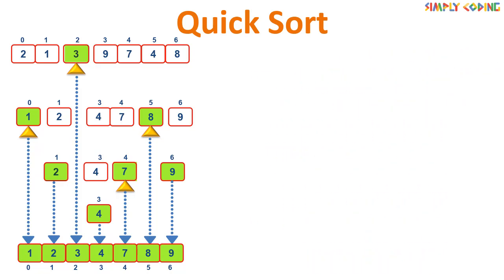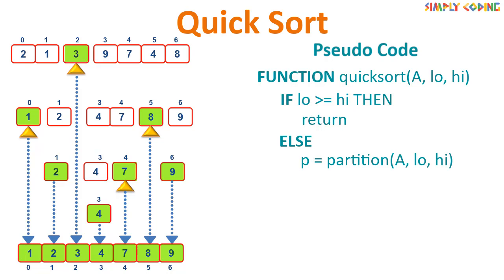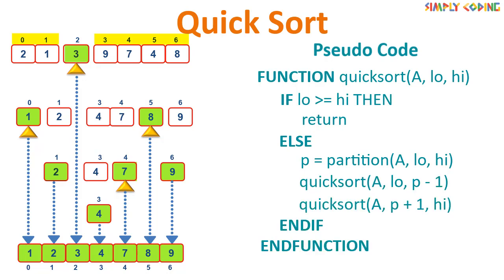Let's write the pseudo code. We start with the recursive function quicksort, which takes as parameters the array, the lowest index, and the highest index. Rather than creating a new array every time, we use array indexes to mark the start and end. The base case is: if the lowest index is greater than or equal to the highest index — meaning there are no or only one member in the array — we return as the array is already sorted. In the recursive case, we call the partition function to split the array into two sub-arrays. It returns the index of the pivot, and we then call quicksort twice for both halves.